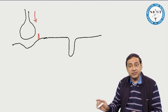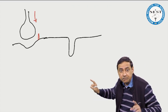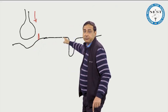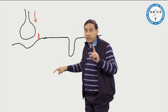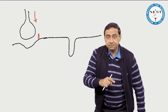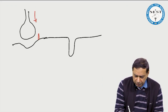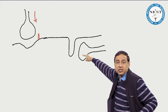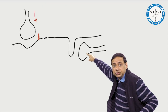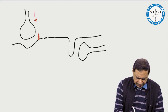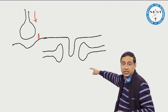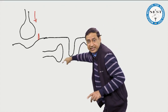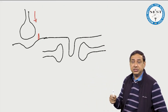The skeletal muscle cell membrane penetrates deep inside the skeletal muscle — this is known as the T-tubule or transverse tubule. Inside the skeletal muscle, we have the sarcoplasmic reticulum. The enlarged portion of the sarcoplasmic reticulum on each side is known as the cistern. This entire assembly — T-tubule with a cistern on each side — is known as the triad.